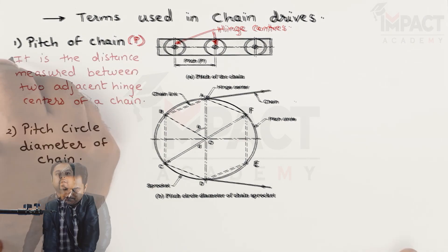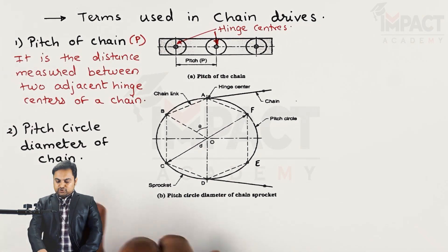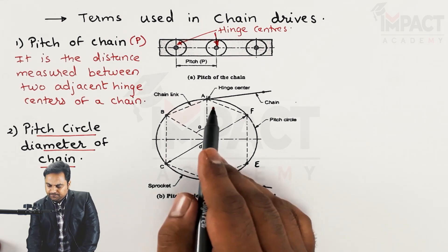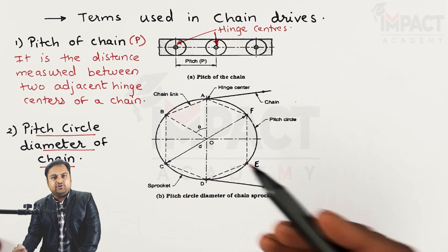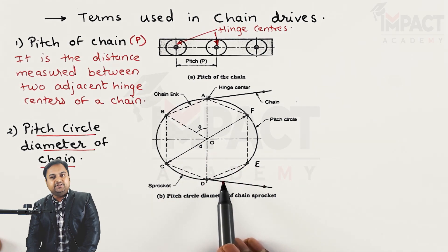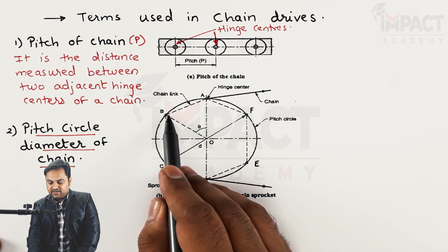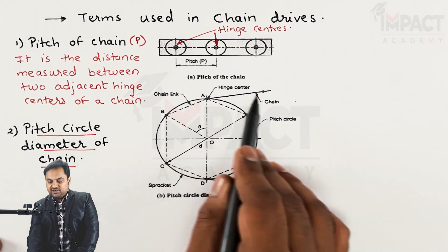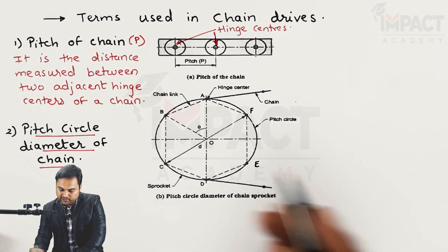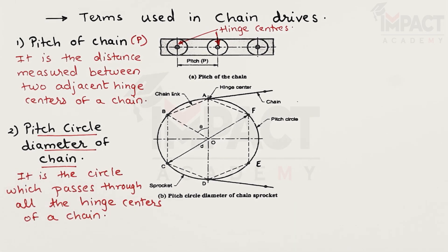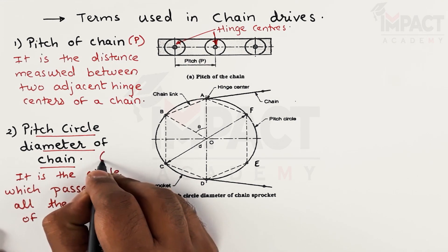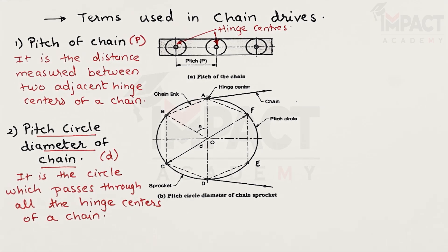The second term is the pitch circle diameter of the chain. The chain is wrapped around the sprocket, and as it passes over the sprocket there are a number of hinge centers — for example, points A, B, C, D, E, and F as shown in the figure. These are the points on the sprocket over which the chain is mounted. The circle generated through all these hinge centers is called the pitch circle, and the pitch circle diameter is denoted by D.